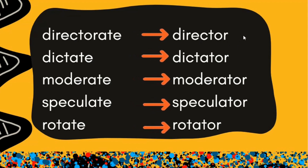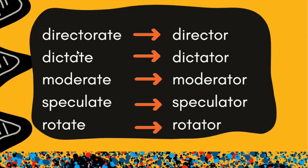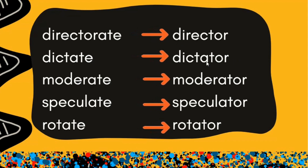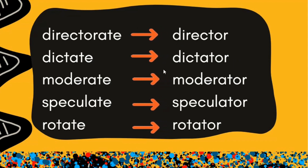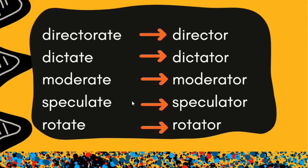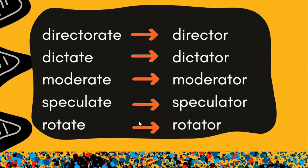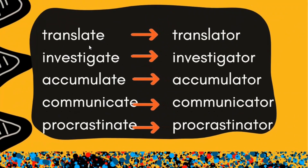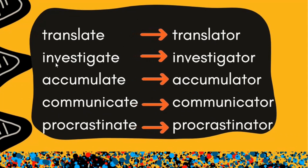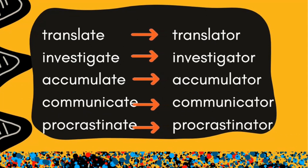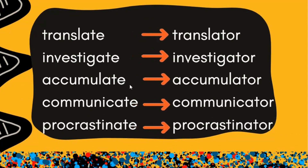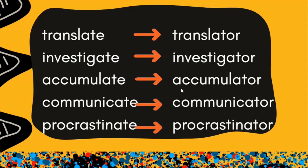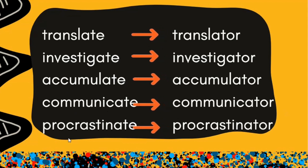So: directorate becomes director; dictate becomes dictator; moderate becomes moderator; speculate becomes speculator; rotate becomes rotator. Some other examples — translate becomes translator; investigate becomes investigator; accumulate becomes accumulator; communicate becomes communicator; procrastinate becomes procrastinator.